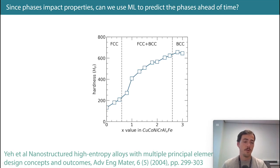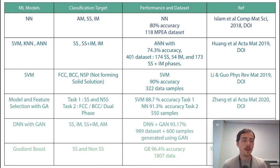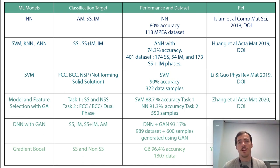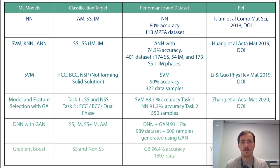So clearly it's important to know what phases are present, because they can, as you see in this case, dictate materials properties. Unsurprisingly, in the roughly 18 years since the discovery of these materials, there's been quite a bit of work using different models, including machine learning models, to predict different phases that might form.